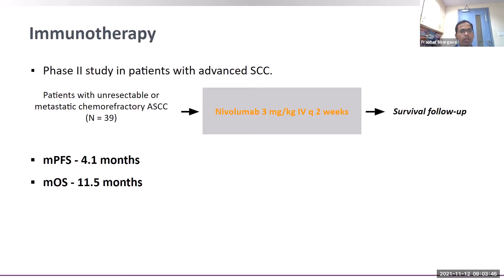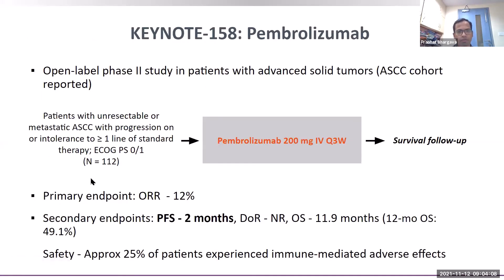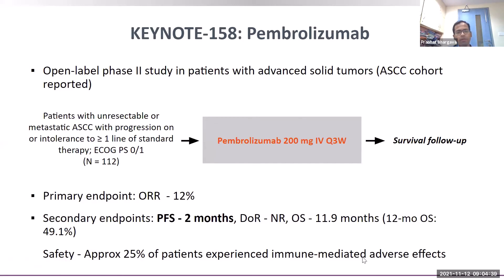Immunotherapy has been tried in squamous cell carcinoma of the anal canal in phase 2 studies as second-line and beyond. Nivolumab was given to 39 patients; median PFS was only 4.1 months and median OS was 11.5 months. Pembrolizumab was used in 111–112 patients after more than one line of prior therapy; overall response rate was only 12 percent, median PFS was about 2 months, but duration of response has not been reached in responders, and OS was around 11 months. Approximately 25 percent of patients experienced immune-mediated adverse events.